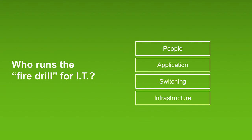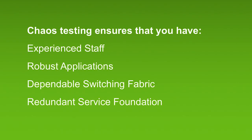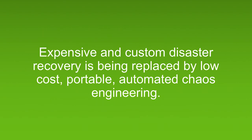The real question is: who runs the fire drill for IT? If something goes wrong with your systems, you need to figure out how to work on this. The systems have layers: infrastructure at the bottom, a switching layer connecting your application to the infrastructure, the application itself, and the people operating it. There's a new team called the chaos engineering team — there's a book published by O'Reilly, written by engineers from Netflix. If you get chaos engineering right, it ensures experienced staff who know how to respond to issues, robust applications, a dependable switching fabric that can route around problems, and enough redundancy. Expensive custom disaster recovery is being replaced by low-cost, portable, and automated chaos engineering principles.